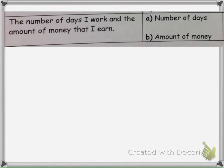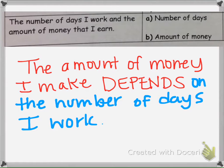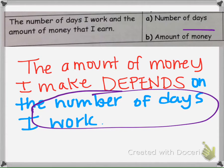Here we have the number of days I work and the amount of money that I earn. We need to ask: does the number of days worked depend on the amount of money I earn, or is the amount of money I earn dependent on how many days I work? The amount of money I make depends on how many days I work — the more days I work, the more money I should be making. So the number of days worked is the independent variable, because the amount of money depends on the number of days worked.